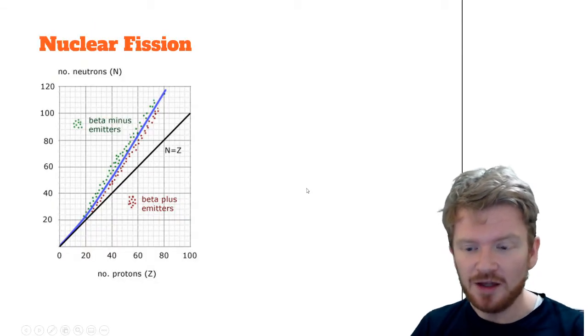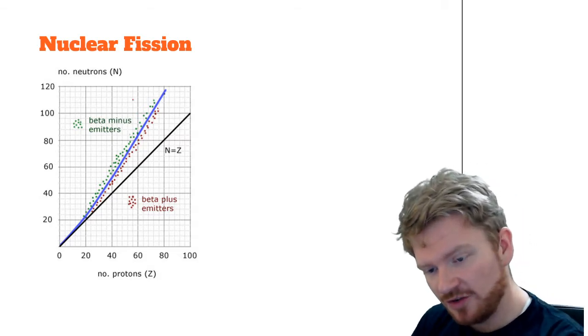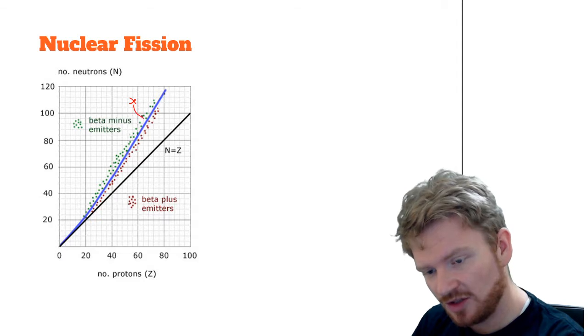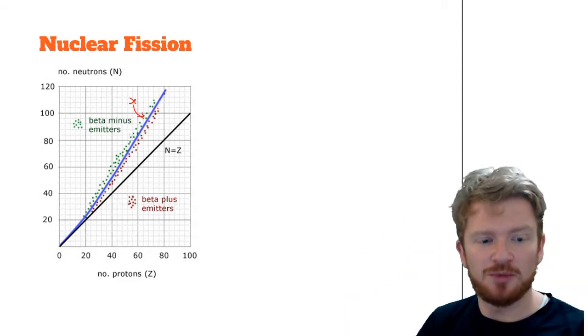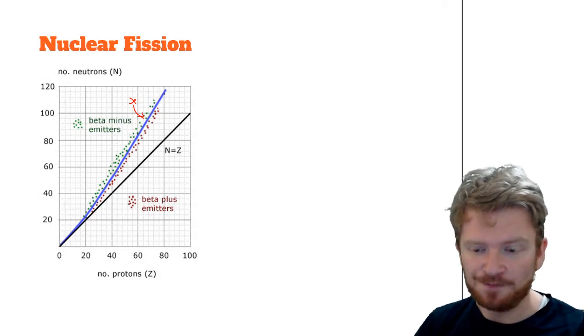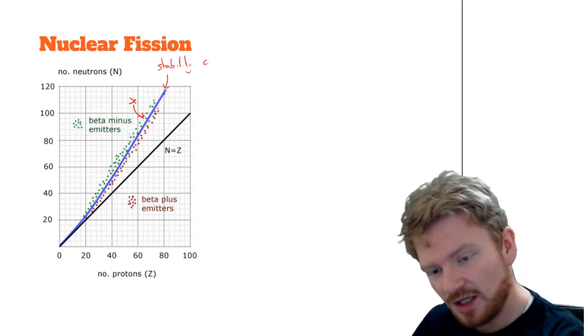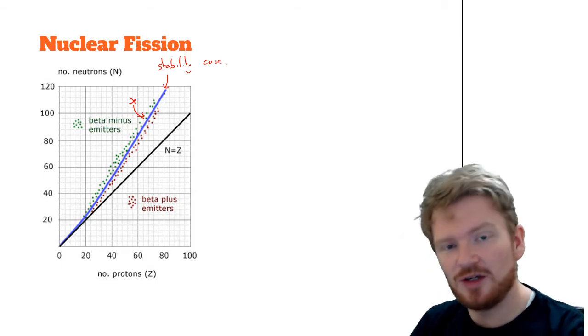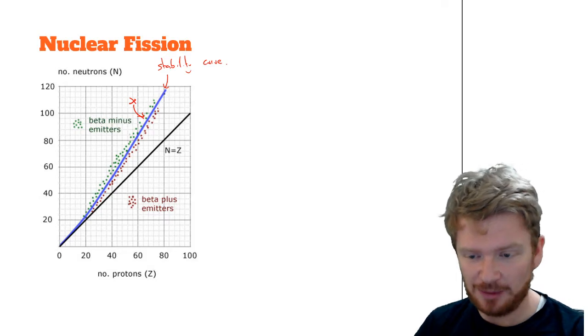So if you remember the key goal of unstable nuclei, so that's nuclei with basically the wrong number of protons or neutrons, their goal is to get to this blue line called the stability curve. And in the previous couple of lessons we looked at alpha, beta and gamma as three ways that nuclei can become more stable.